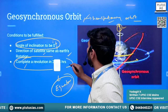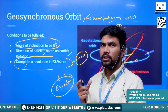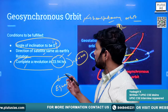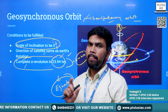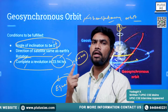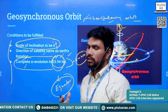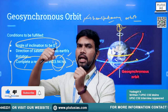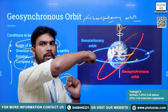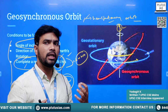Third, the satellite should complete one revolution in 23.94 hours — approximately 24 hours. Earth completes its rotation in approximately 24 hours, exactly 23.94 hours. In the same time, the satellite must also complete one full revolution around the earth. When all these conditions are fulfilled, the satellite appears stationary when viewed from the surface of the earth.